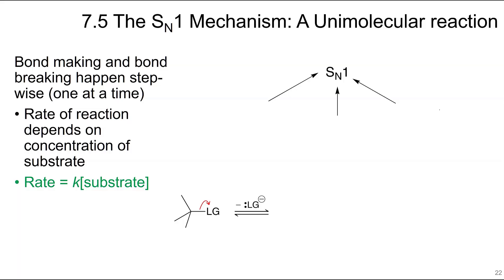In part B, we're going to look at the SN1 reaction, which is a unimolecular reaction. In an SN1 reaction, the bond making and the bond breaking happen stepwise, or one at a time. If you recall in the SN2 reaction, it was happening at the same time. The S in SN1 stands for substitution, just like it did with SN2.